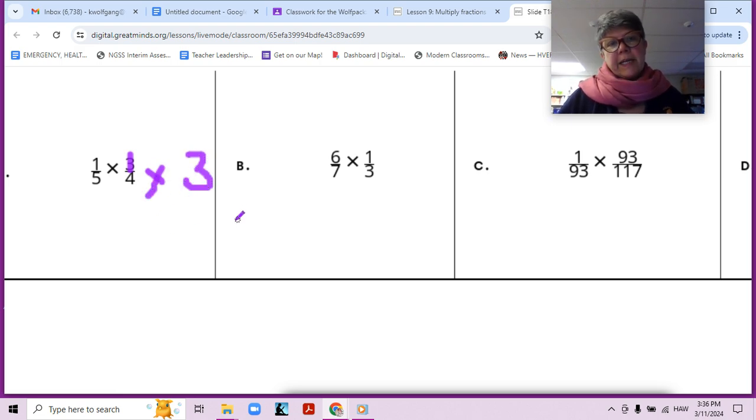Okay. Make sure you're writing this down somewhere for your notes. So one fifth times one fourth is one twentieth times three. And remember, this is like a whole number three, so it would be over one because we have three fourths. That's one fourth. That's three of them, right? So that would be three twentieths. Just another way of looking at things.